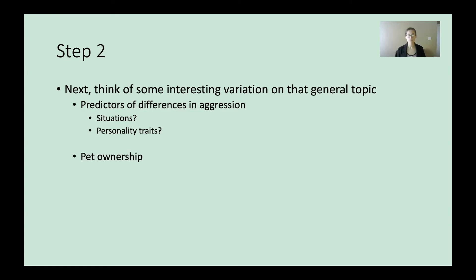Or if you're interested in pet ownership, think about predictors of who owns what type of pet, or are there dependent outcomes, dependent variables like mental health benefits of having a pet. Does the type of pet matter? These are different ways you could vary one or more of your variables to come up with more of a question.